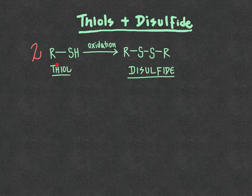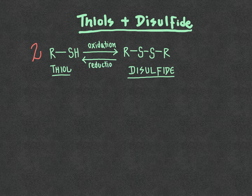If we wanted to go in the other direction, we would refer to that as a reduction process because we're reducing the number of bonds between carbon and the electronegative sulfur atoms. So we'd refer to that as reduction. This reaction is fully reversible, and this reaction is at the heart of curly hair versus straight hair.